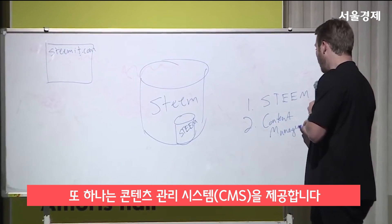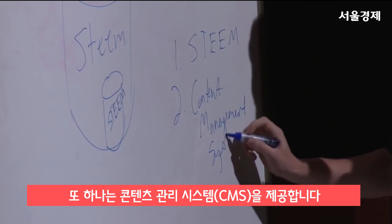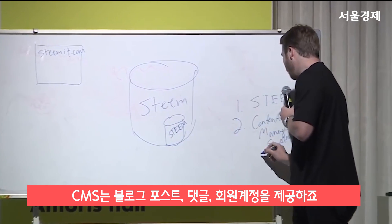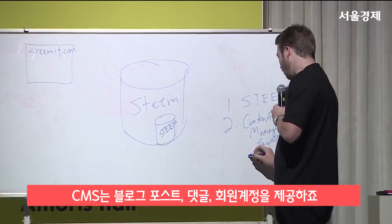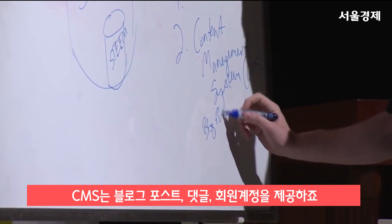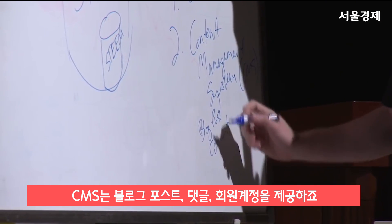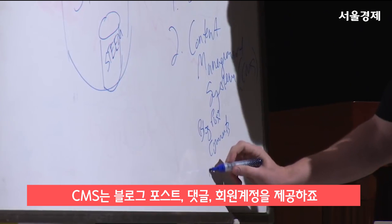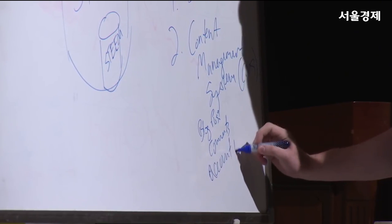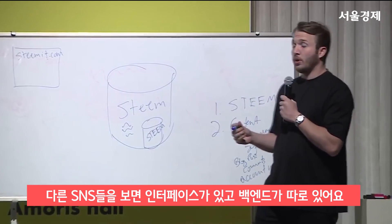Really a content management system. What it offers is basically three core things: blog posts, comments, and account names. And you might be wondering what makes this any different from any other social media platform.